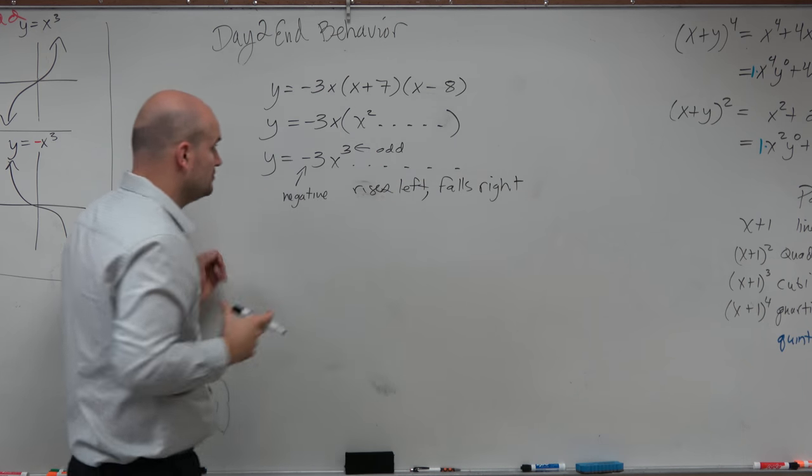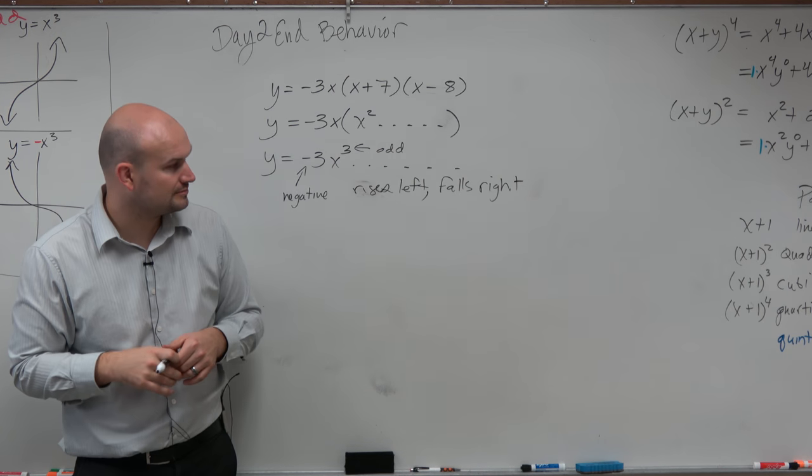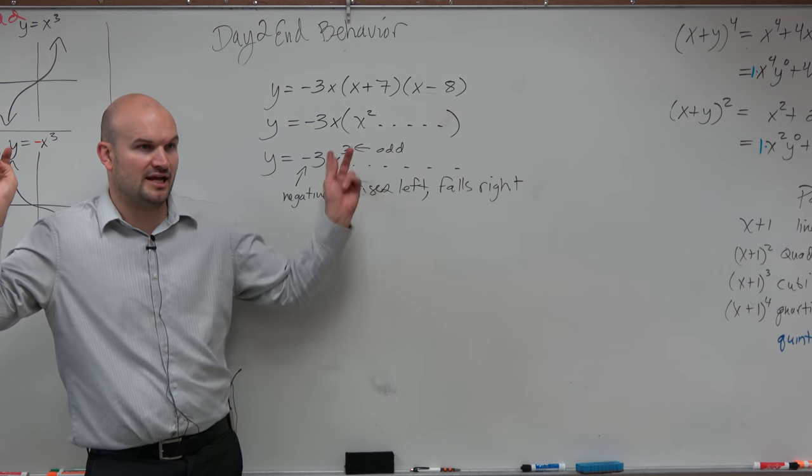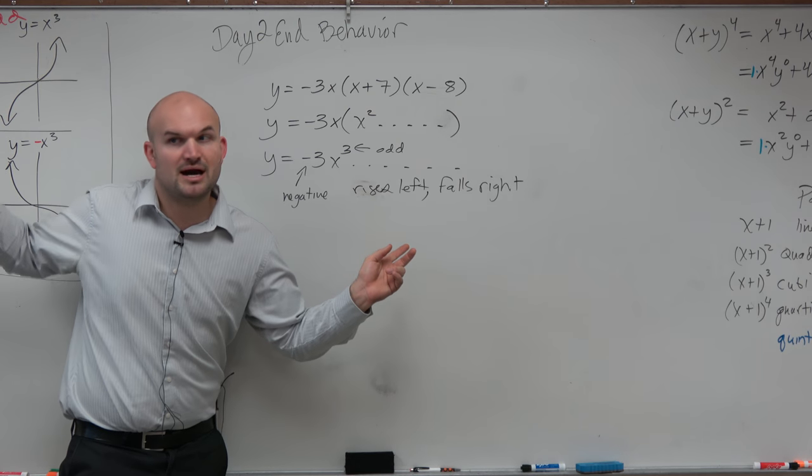That is our Algebra 2 kind of definition or usage. And again, you can look at the graph below me and realize that is correct, right? It's a negative coefficient and it's odd. So you can see the graph right behind me.